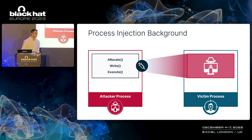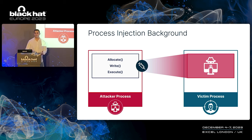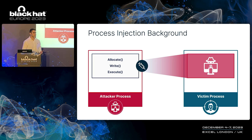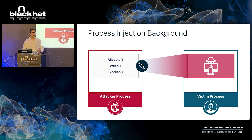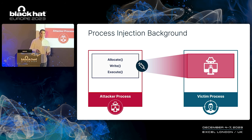For those of you who do not know, process injection is an evasion technique used to execute arbitrary code in a target process. It usually consists of a chain of three primitives. The first one would be an allocation primitive, used to allocate memory on the target process. The second primitive would be a writing primitive, used to write malicious shellcode to the previously allocated memory. And the third primitive would be the execution primitive, used to execute the malicious code written.